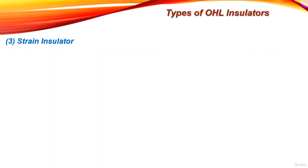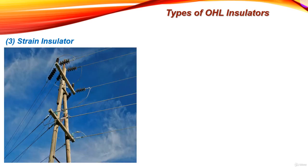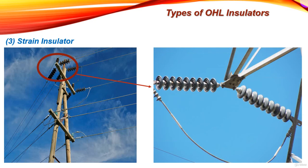The strain insulator is used when there is a dead end of the line, or there is a corner or sharp curve, where the line is subjected to greater tension. In order to relieve the line of excessive tension, strain insulators are used. They are specially mechanically strong suspension insulators, used to take the tension of the conductor at line terminals.